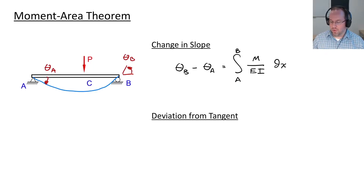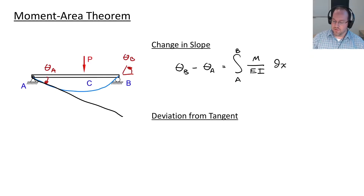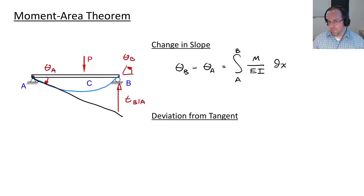The same concept applies when looking at displacements, but we can't say a displacement straight out because we'll get constants of integration that we don't know without solving for them. Instead, we get a deviation from a tangent. Consider a tangent line at point A, tangent to the deflected shape. The deviation from that tangent is the distance to the beam from that tangent. We'll call this distance B slash A — the deviation from the tangent at location B where the tangent is drawn starting at A.